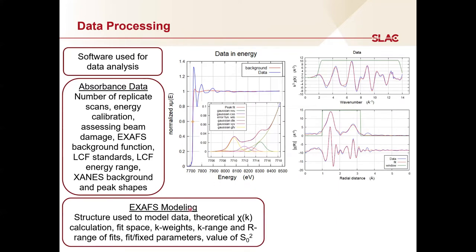When modeling EXAFS data, describe the structure you used and how you generated the theoretical absorber-backscatter contributions, the chi(k). Did you perform the fit in k-space or r-space? What k-weightings did you use? What k and r ranges were used for your fits? Which parameters were kept fixed and which ones did you fit? Finally, how did you determine the value of S0-squared — did you fix it to a specific value or determine it using a standard?